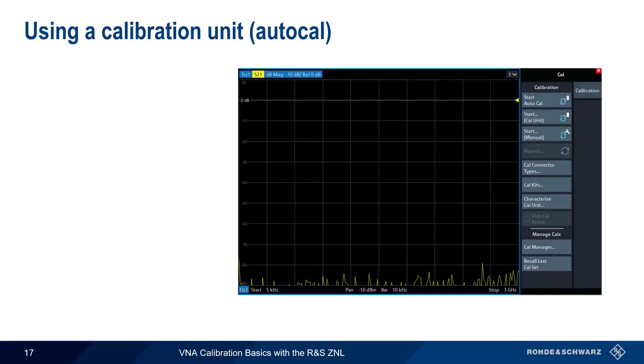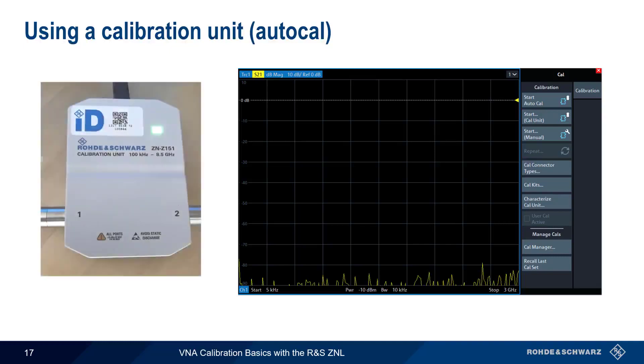Next, we'll look at using an automatic calibration unit, or AutoCal. These examples were made using a ZNZ151, but the procedure is the same on other units. Once we connect our calibration unit to the ZNL via USB, two new options appear in our calibration menu: Start AutoCal and Start Cal Unit.